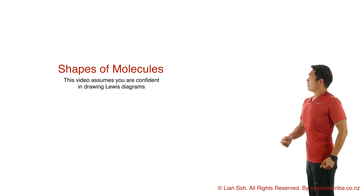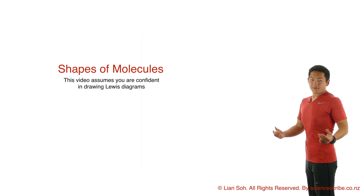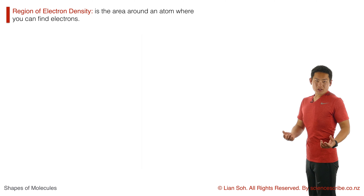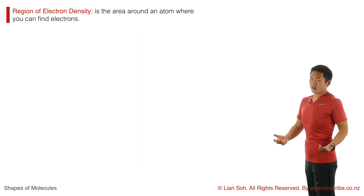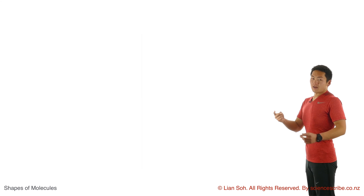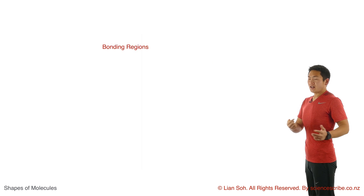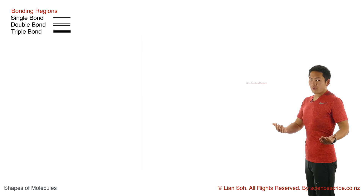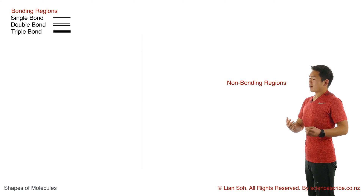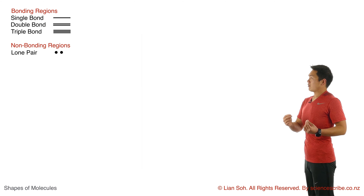Before I can work out the shape of a molecule, I first need to understand something called a region of electron density. A region of electron density is just the space around an atom where you can expect to find electrons. There are two types: bonding regions of electron density, which covers things like single bonds, double bonds, and triple bonds, and non-bonding regions of electron density, like lone pairs of electrons that you sometimes find around atoms.